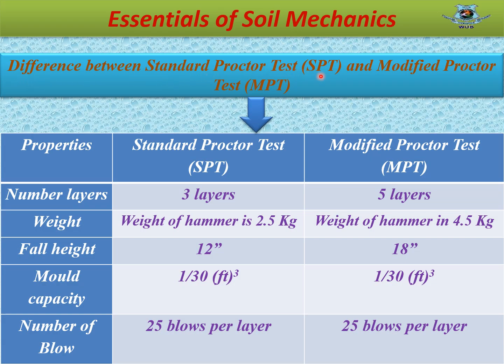Difference between standard Proctor test and modified Proctor test: The standard Proctor test is done in 3 layers whereas the modified Proctor test is done in 5 layers. The hammer used for the standard Proctor test is 2.5 kg and for the modified Proctor test it is 4.5 kg. The height of hammer free fall is 12 inches for the standard Proctor test and 18 inches for the modified Proctor test. Mold capacity is 1/30 CFT for both tests, and 25 blows are required to perform both tests.